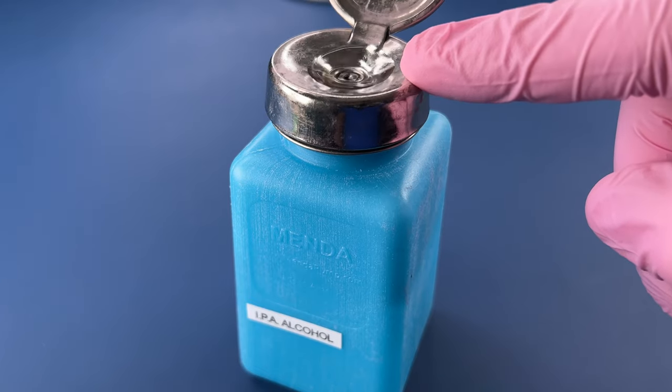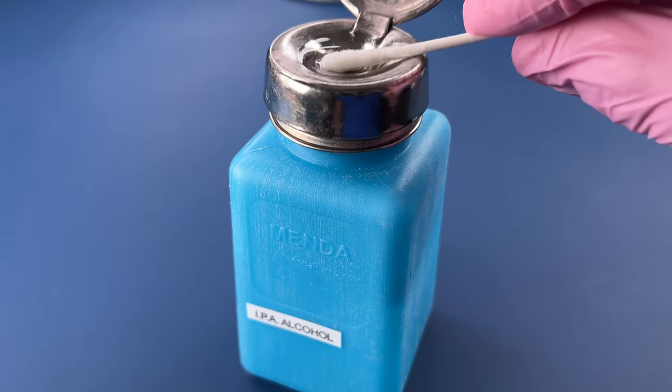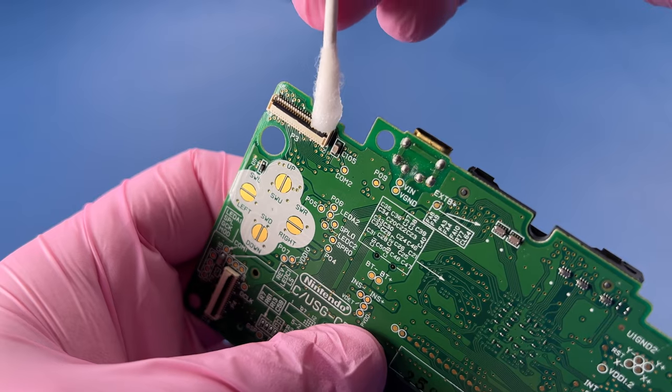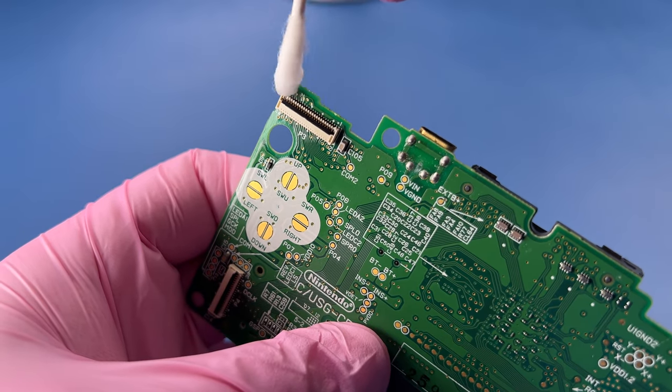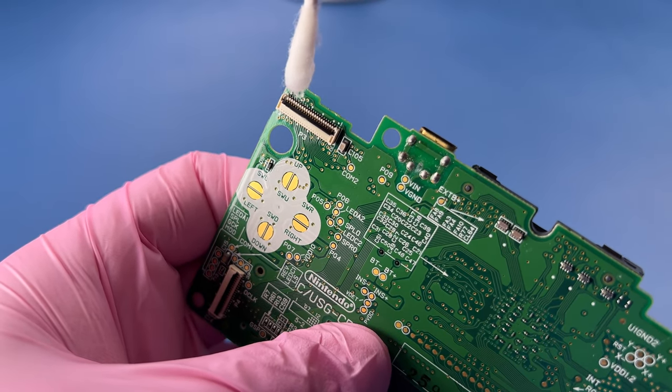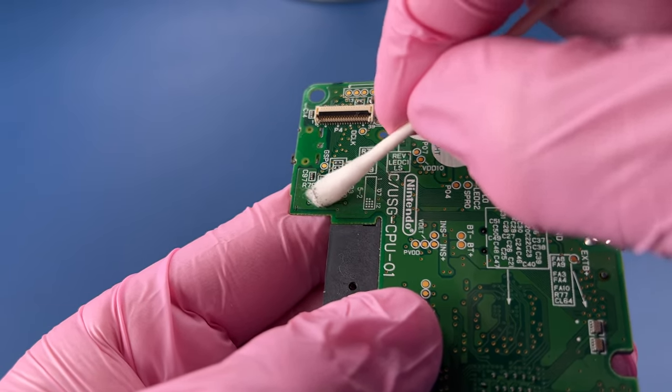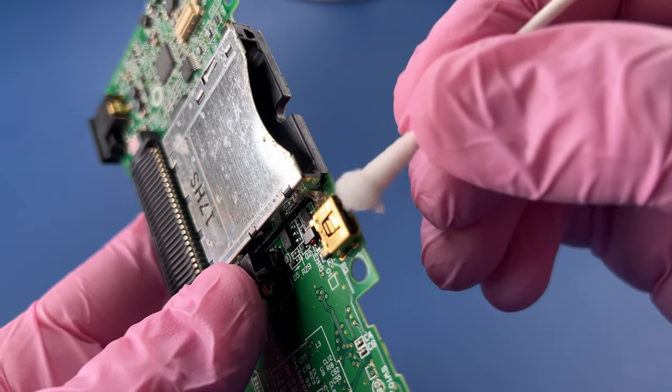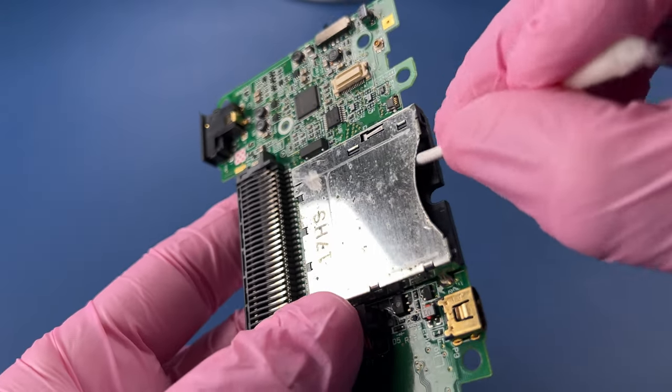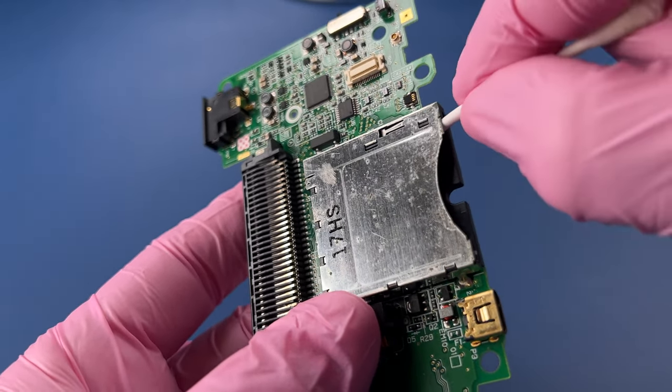Using my 99% solution of isopropyl alcohol and we will get this clean going. Basically I am looking for all of the places where there's anything sticky, which doesn't actually show up super well on the camera but I can find them. I want to make sure to clean out these cartridge slots really well.